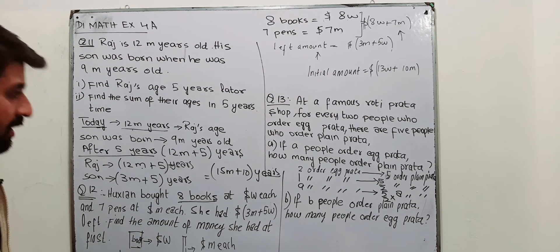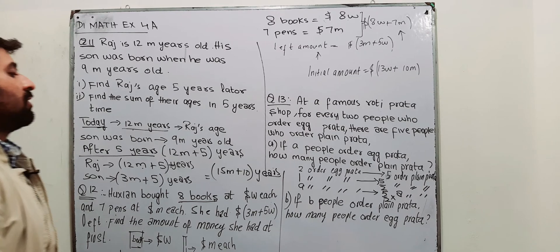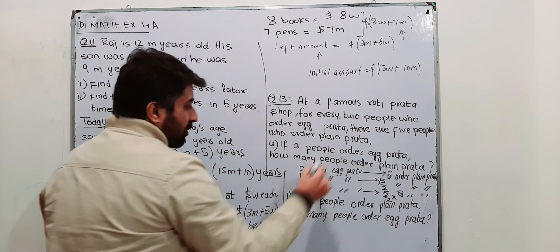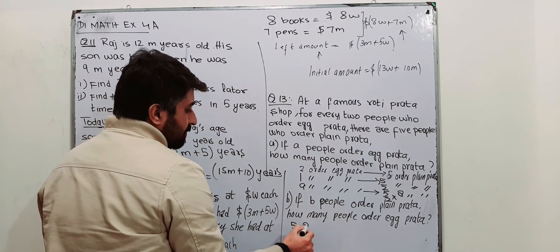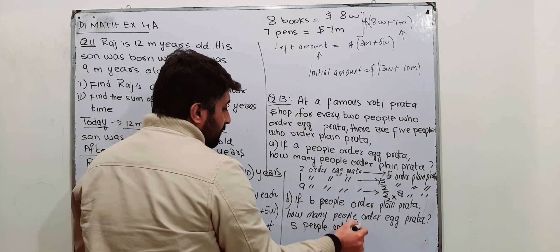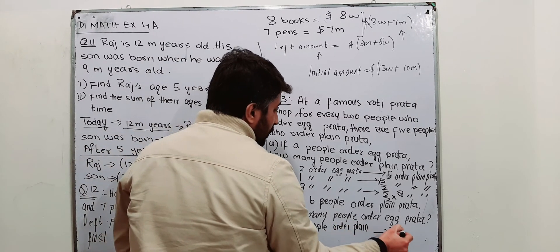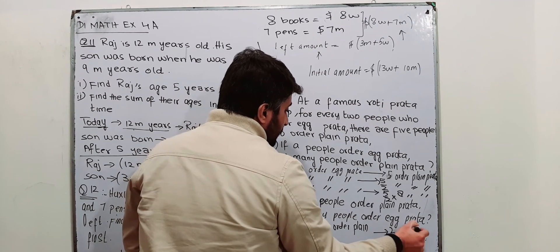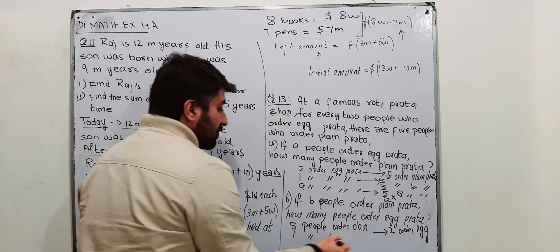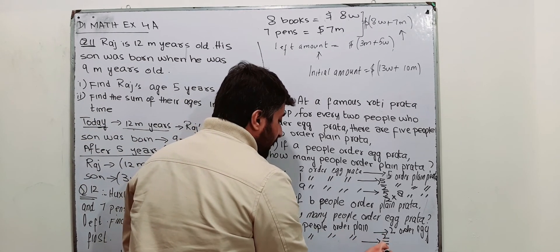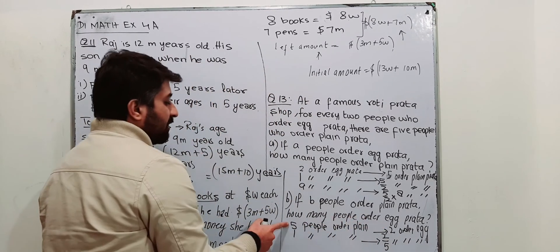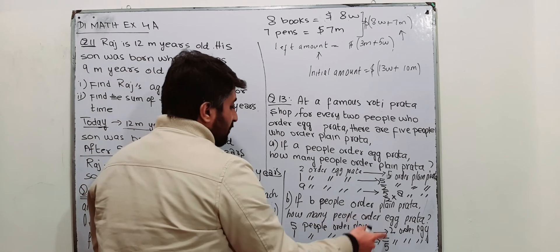If b people order plain pratha, how many people order egg pratha? The equation is simple: five people order plain pratha; against them, two order egg pratha. So if one person orders plain pratha, then 2/5 will order egg pratha. Divide five on both sides: five by five is one, two by five is two by five.